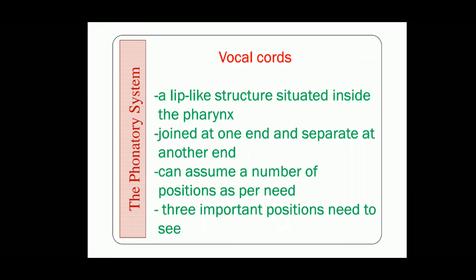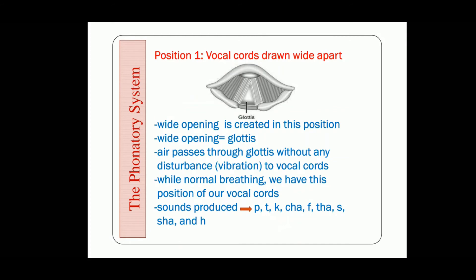However, three important positions are most frequent and most important, so we shall see the three important positions of the vocal cords. The first position: vocal cords drawn wide apart. You can see a lip-like structure here — the upper part and the lower part — and a gap is created because the vocal cords are drawn wide apart, separated from each other. Because of that, we can see a wide opening there, and this wide opening between the vocal cords is known as the glottis.